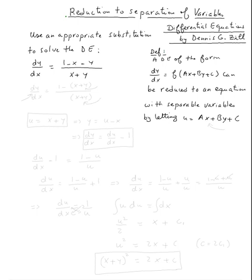Let's read the definition. The definition says a differential equation of the form dy/dx equal f of ax plus by plus c can be reduced to an equation with separable variables. First we need to know: is this really an equation of that form? Yes. If you rewrite the equation as (1 minus x plus y) over (x plus y), you can tell it's a f of x plus y.